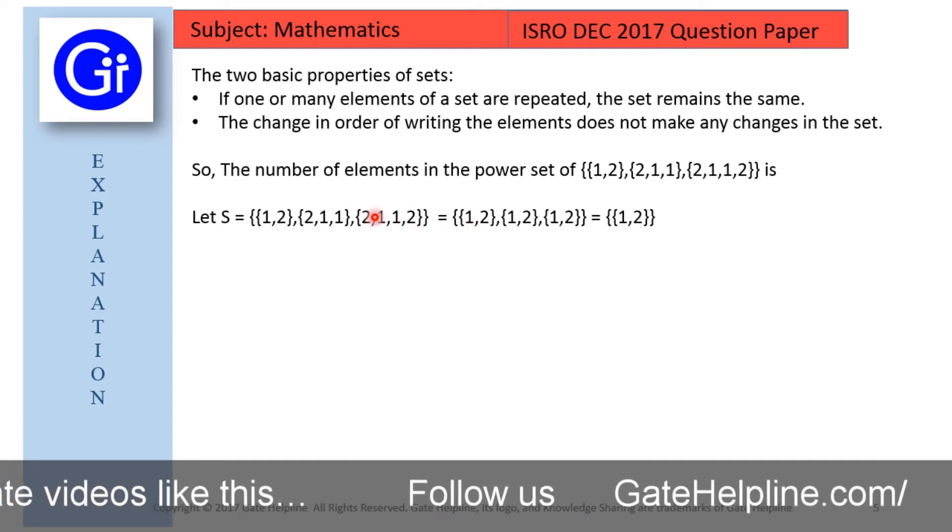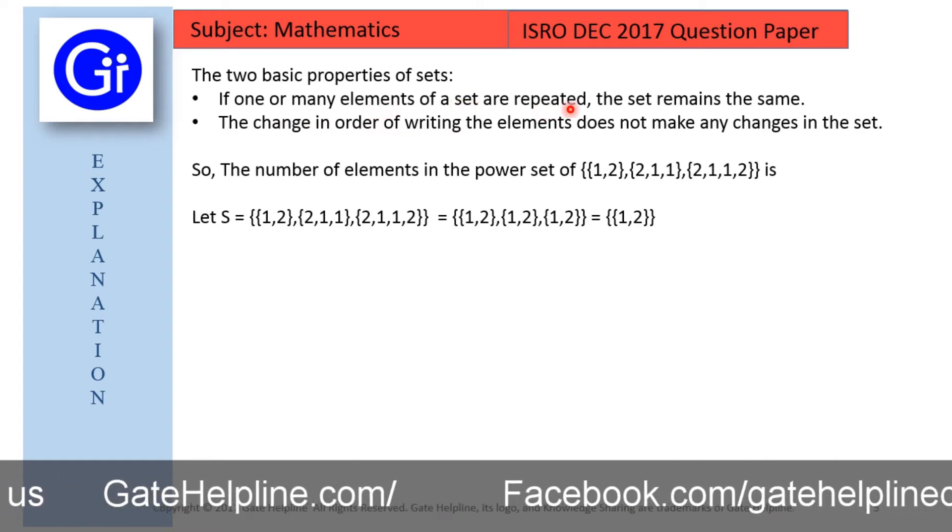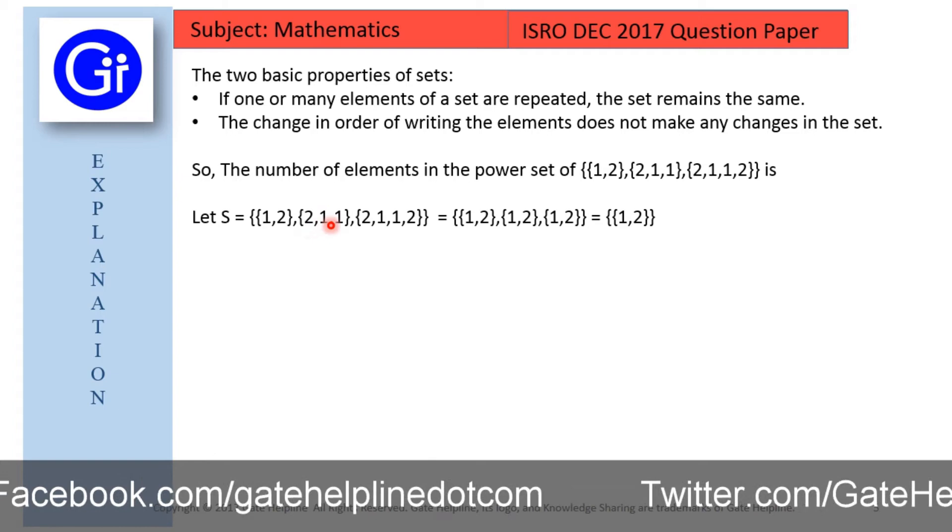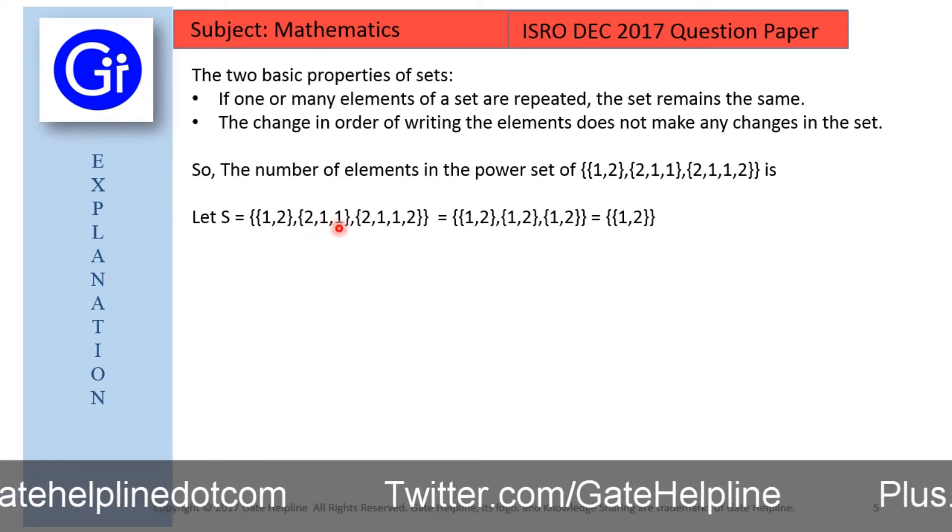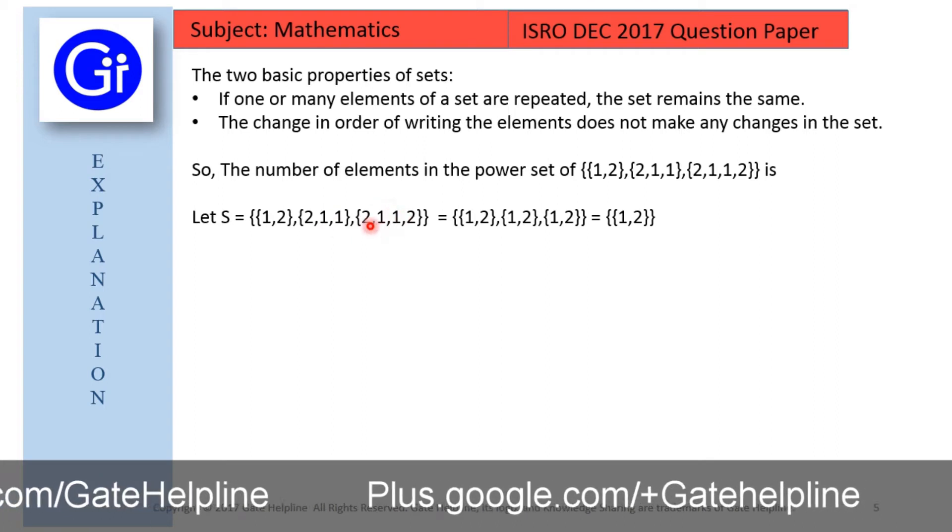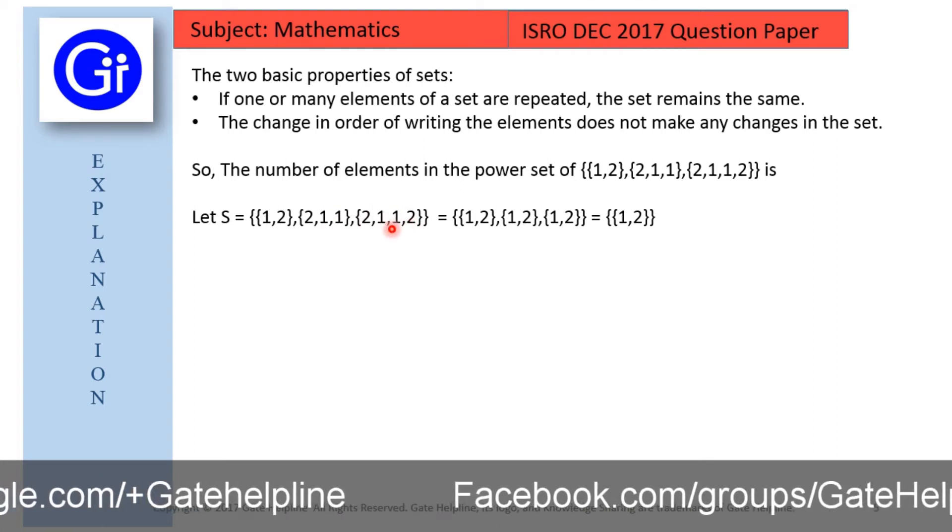So here we can apply the first property. If one or more elements of a set are repeated the set remains the same. So here we can see that in the second element 1 is repeated, so we can mark it as {1, 2} only, and in the third element also {1, 2} is repeated, so it will be {1, 2} only.